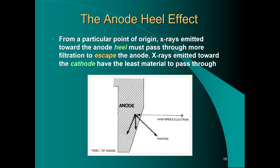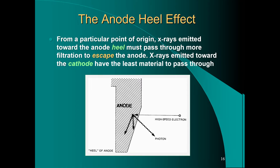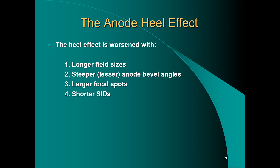From a particular point of origin, x-rays emitted toward the anode heel must pass through more material to escape the anode, while x-rays emitted toward the cathode have the least material to pass through. Due to attenuation of electromagnetic radiation moving through matter, the intensity at the image receptor will be greater at the cathode end and less at the anode end.